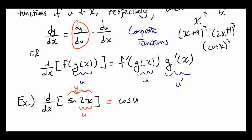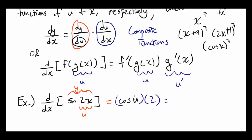We're differentiating with respect to u, so you're going to have the answer in terms of u. Then you multiply it by du/dx, the derivative of u with respect to x. Since u is 2x, you multiply by the derivative of 2x, which is 2. So you have 2 times cosine of u, and since u is 2x, you have 2 times cosine of 2x.